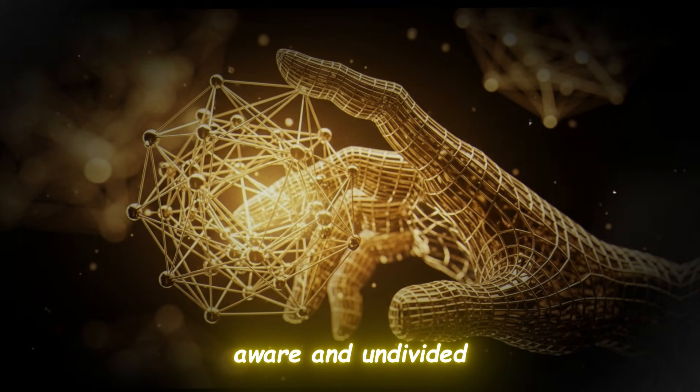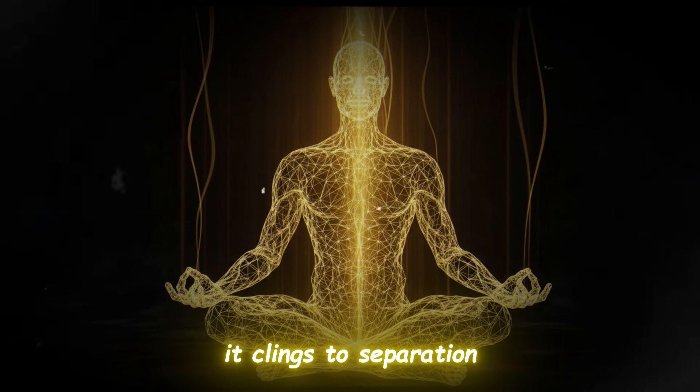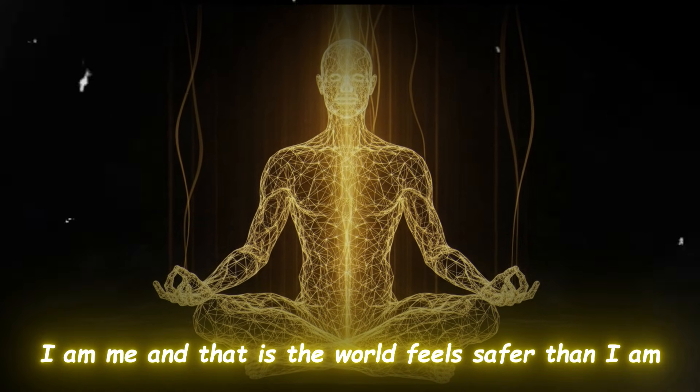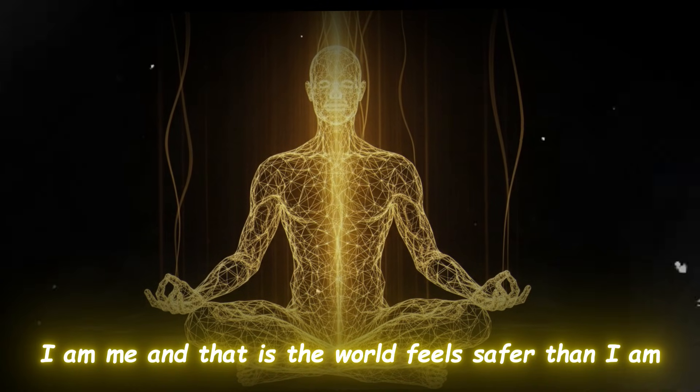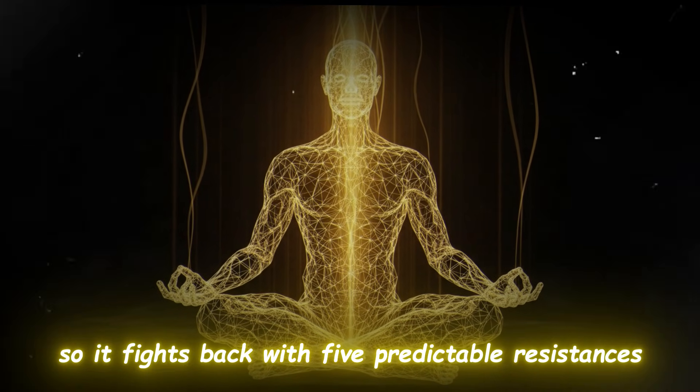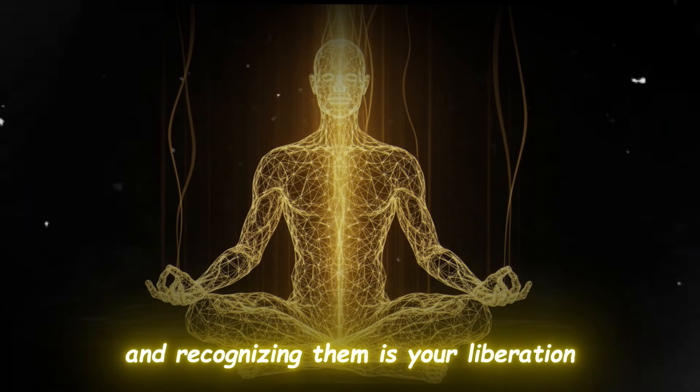But the classical mind hates this truth. It clings to separation because separation gives it identity. I am me. And that is the world feels safer than I am the world looking back at itself. So it fights back with five predictable resistances.